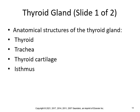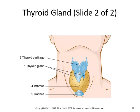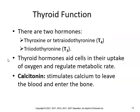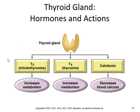The anatomical structures of the thyroid gland include the thyroid, trachea, thyroid cartilage, and the isthmus. The thyroid cartilage and the laryngeal prominence is where your Adam's apple is. There are two hormones: thyroxine or tetraiodothyronine T4, and triiodothyronine T3. These thyroid hormones aid cells in their uptake of oxygen and regulate metabolic rate. Calcitonin stimulates calcium to leave the blood and enter the bone. So: T3 increases metabolism, T4 increases metabolism, and calcitonin decreases your blood calcium levels.